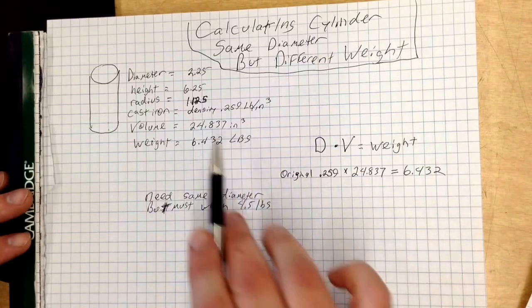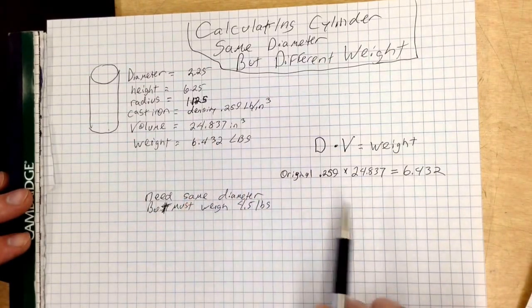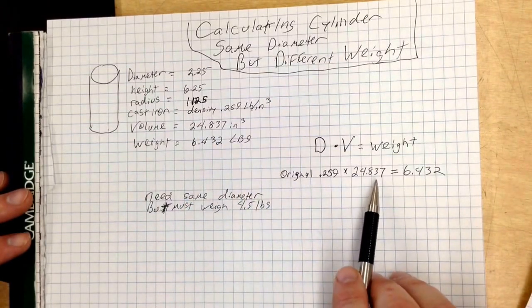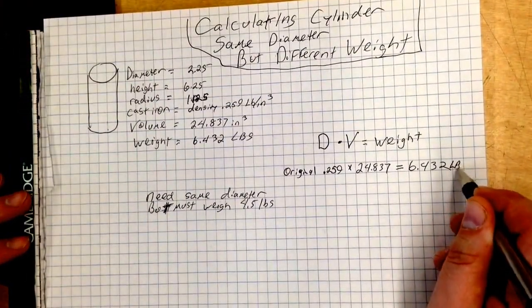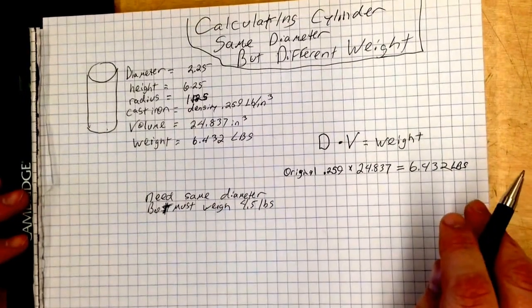So, 0.259, which is the density of cast iron, times 24.837, which is our original volume, gives us a weight of 6.432 pounds. Now, we need something that weighs 4.5 pounds.